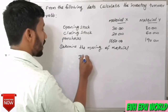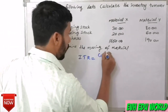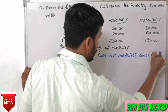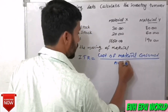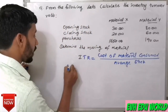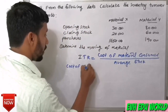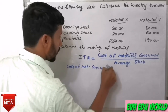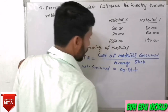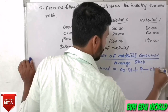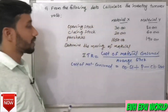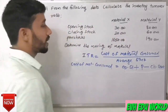The inventory turnover ratio is the cost of material consumed divided by average stock. We will now calculate the cost of material consumed.